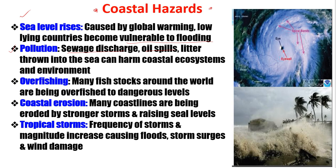Another coastal hazard is pollution — sewage discharge, oil spillage, and litter thrown into the sea can harm coastal ecosystems and the environment. Overfishing is also a hazard, as many fish stocks are being overfished to dangerous levels and can become extinct. Then there is coastal erosion, as many coastlines are being eroded by stronger storms and rising sea levels. Another hazard is tropical storms — the frequency and magnitude of storms increases, causing floods, storm surges, and wind damage.